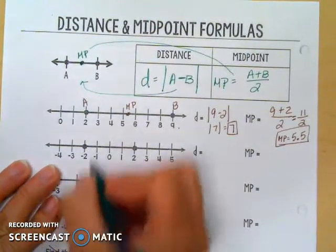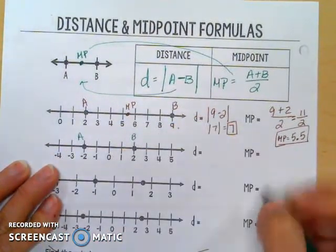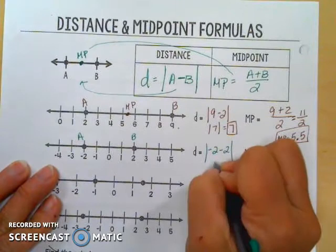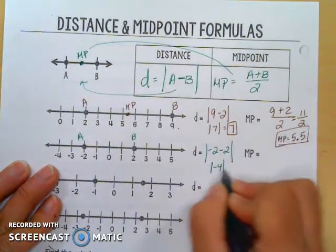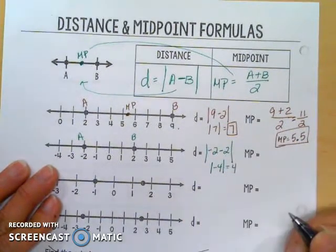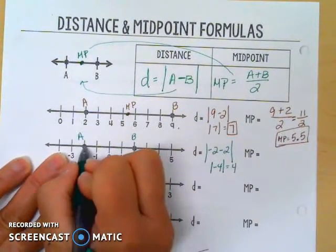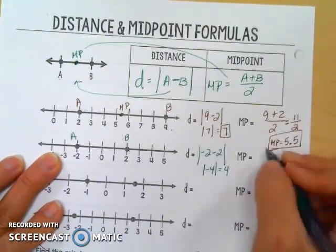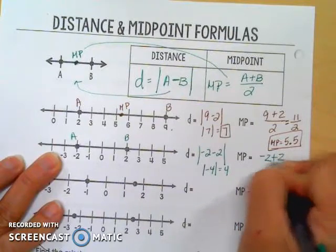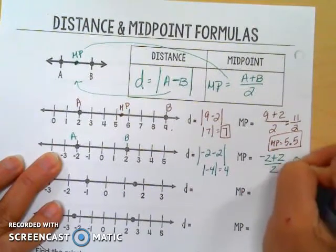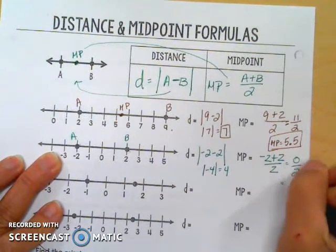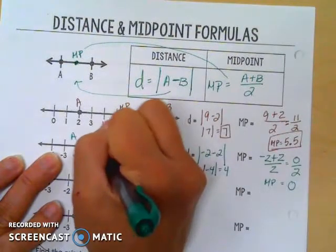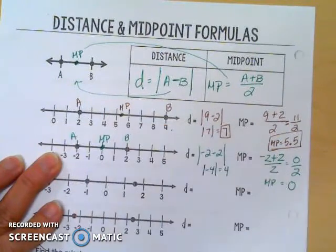The distance for the next one: subtracting negative 2 minus 2 in absolute value. Negative 2 minus 2 is negative 4, and since distance can't be negative, the absolute value is 4. On the number line you could count 1, 2, 3, 4 — yes, there are four spaces between them. For the midpoint: negative 2 plus 2 divided by 2 gives 0 over 2, which is just 0. And looking at the number line, the midpoint is right there at 0.